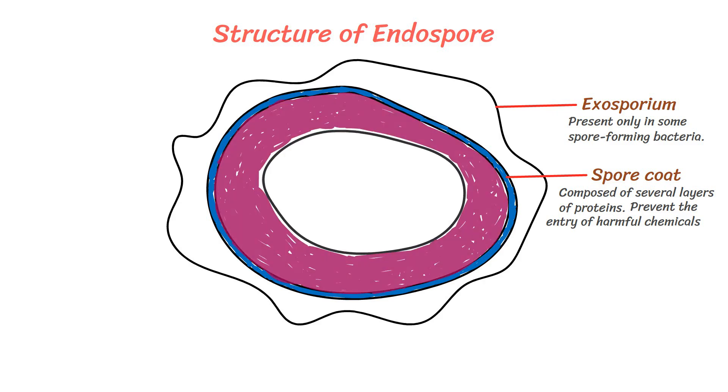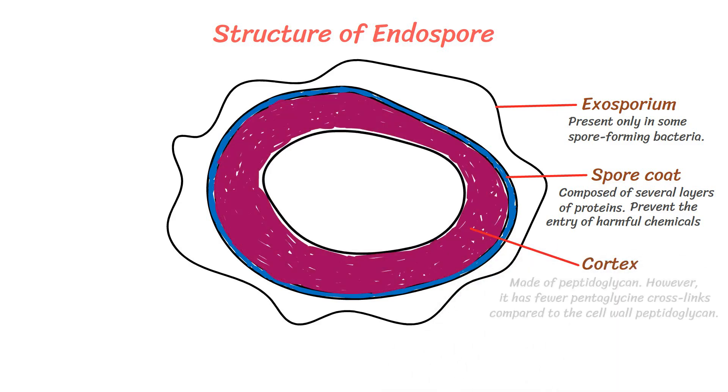Beneath the spore coat, cortex is present. It is made of peptidoglycan. However, it has fewer pentaglycine cross-links compared to the cell wall peptidoglycan.